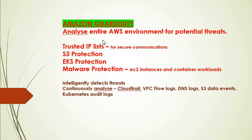Amazon GuardDuty analyzes the entire AWS environment for potential threats. It uses tested IP lists for secure communication, whitelisting tested IPs. It provides S3 protection, EKS protection, Kubernetes service protection, and malware protection for EC2 instances and container workloads. It continuously analyzes and automatically detects threats by monitoring CloudTrail, VPC flow logs, DNS logs, S3 data events, and Kubernetes audit logs.